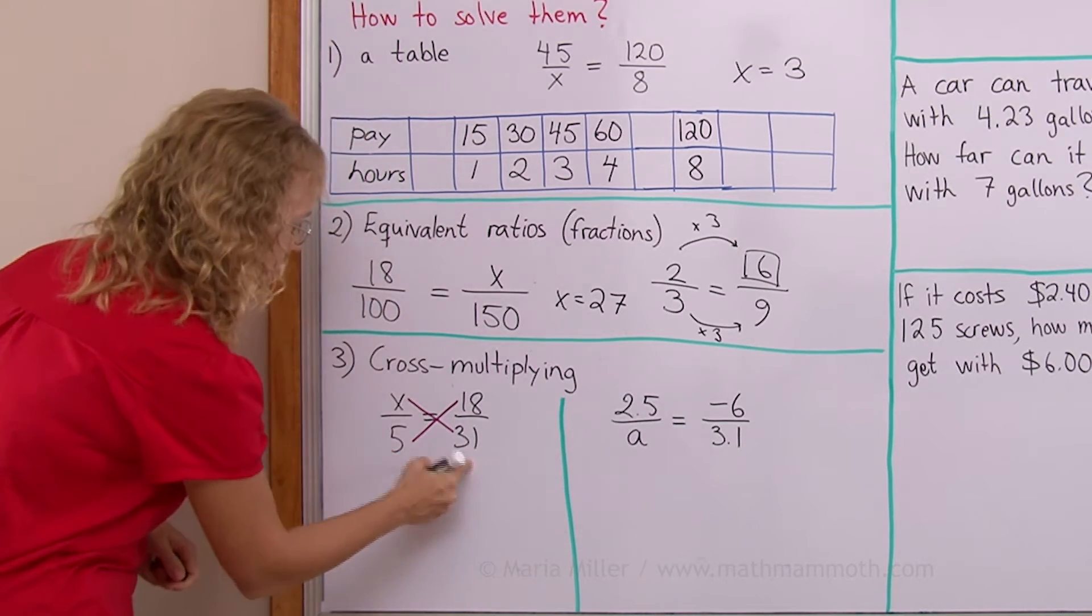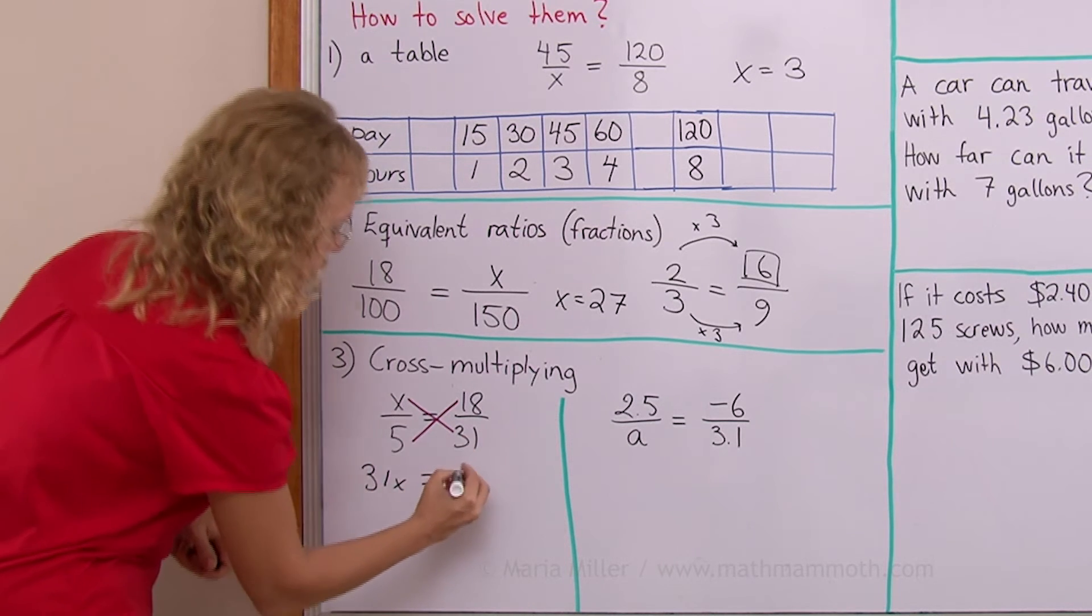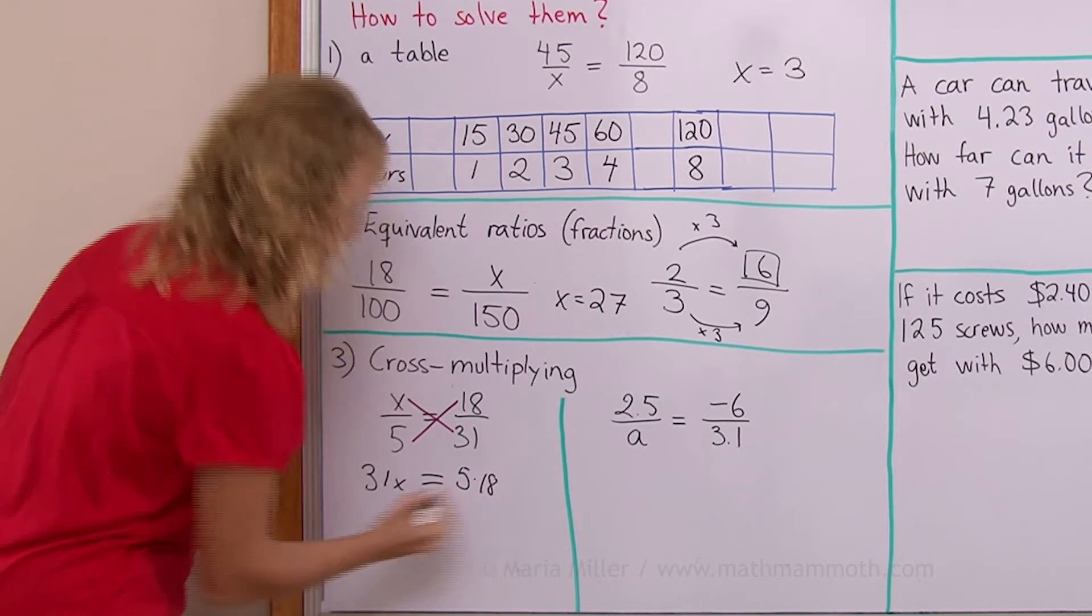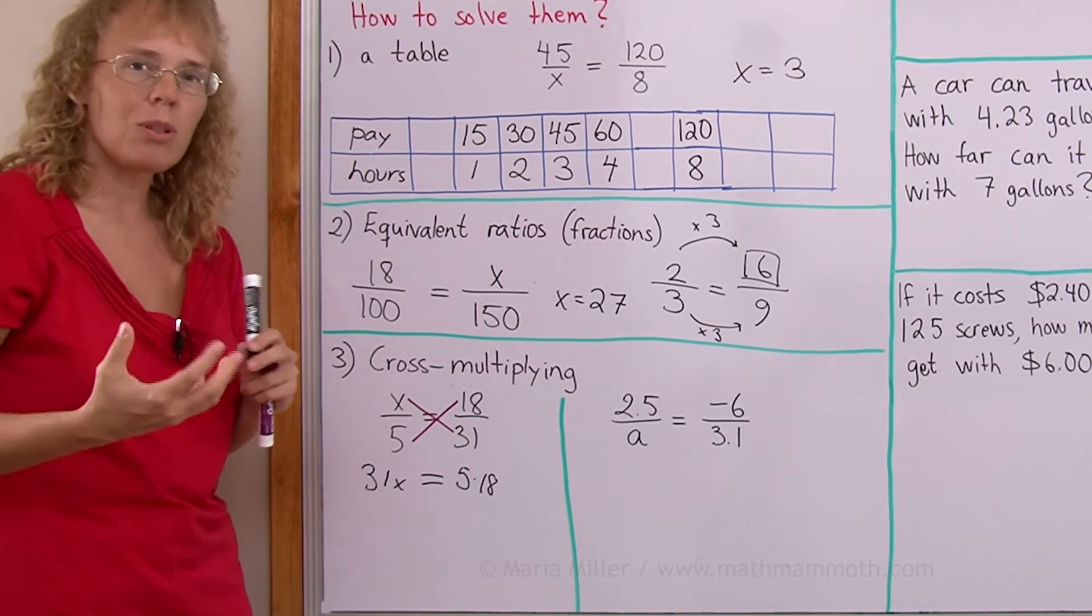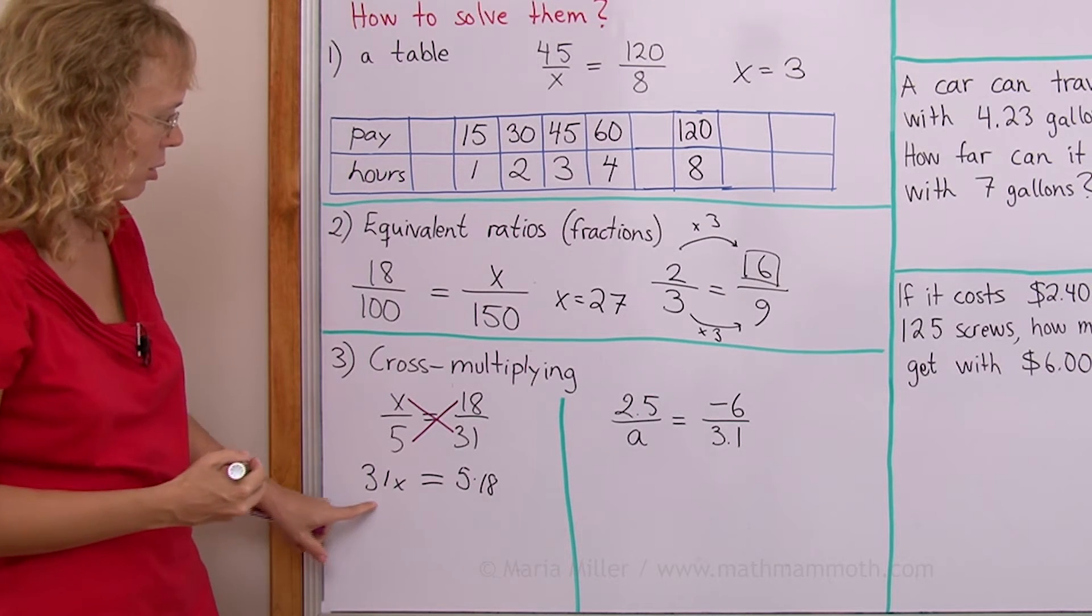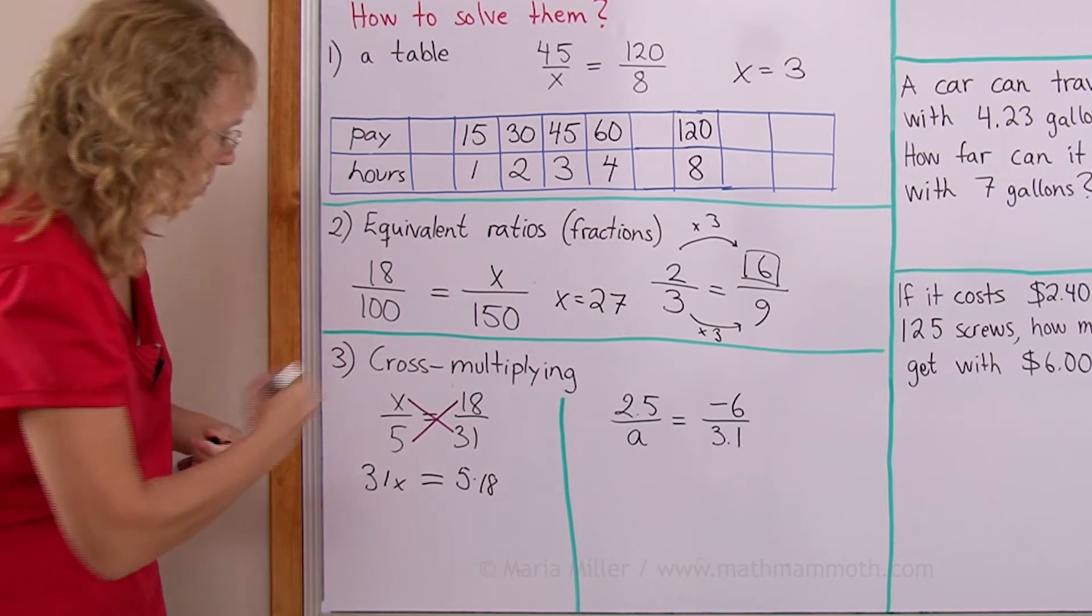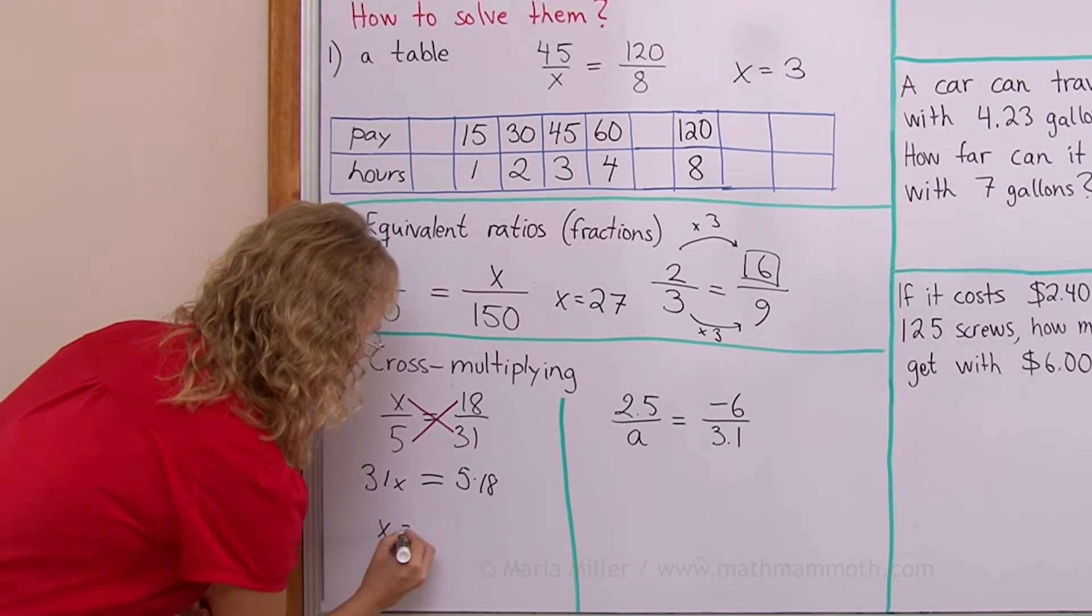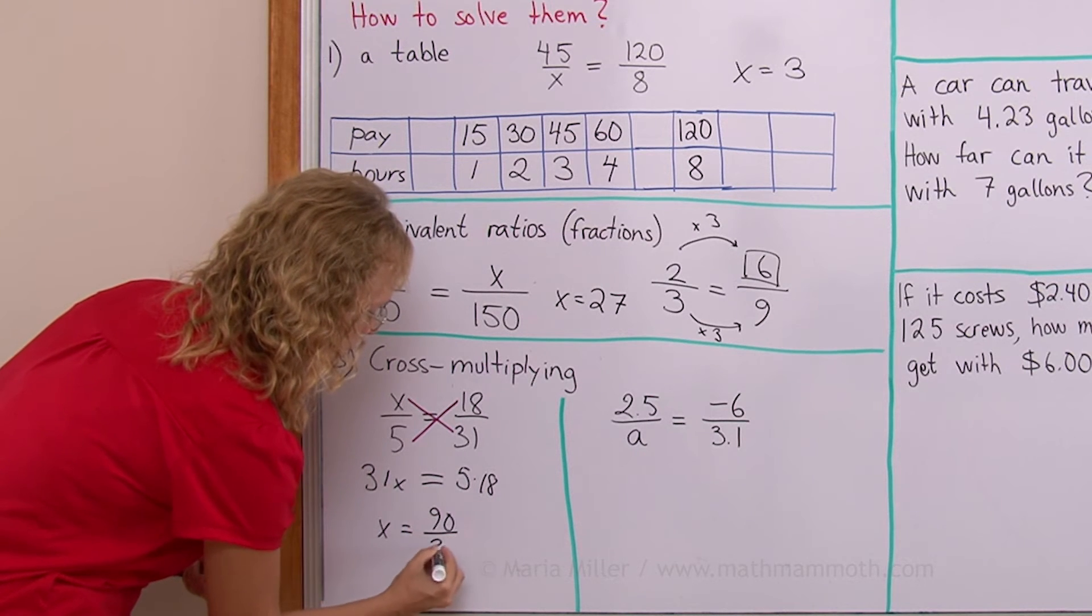In other words, I get 31 times x is equal to 5 times 18. Like that. And now I solve this equation using normal techniques for solving equations. In this case, of course, you need to divide both sides by 31. So we will get x equals. Now this one here is 90 and then divided by 31.